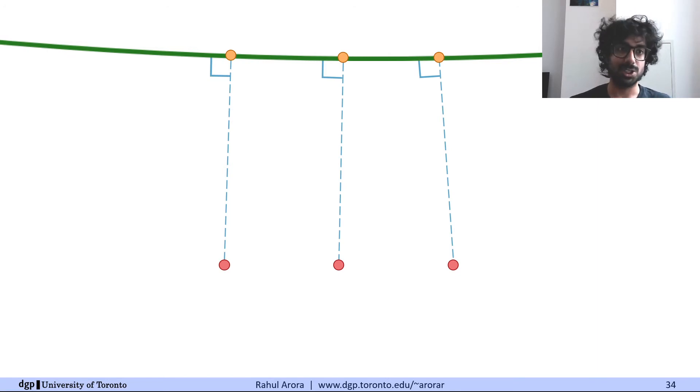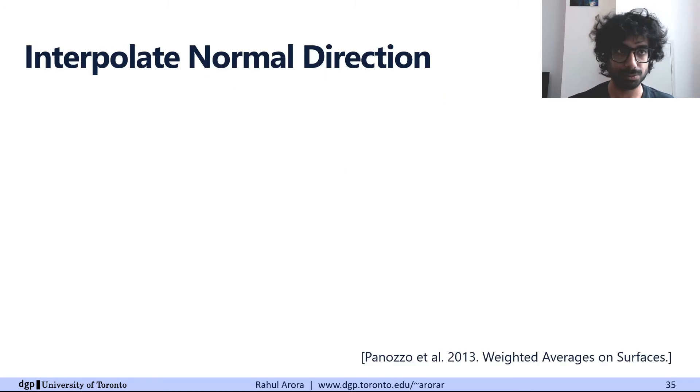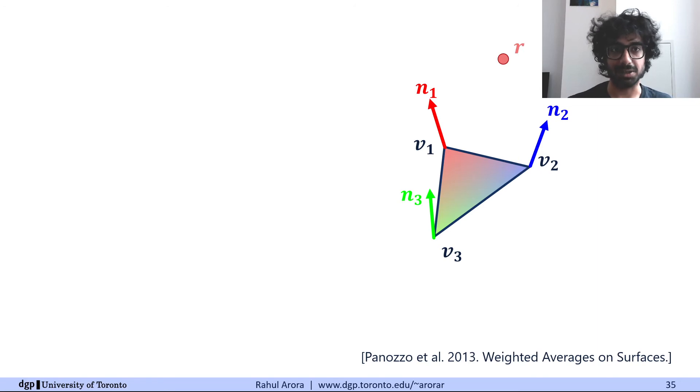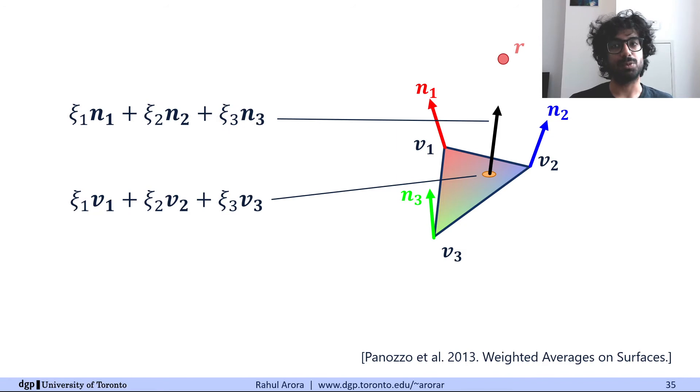So how can we approximate this projection when we only have access to a triangle mesh? To do this, we extend Panozzo and colleagues' Fong projection from 2013. So what they do is, instead of thinking of a triangle as flat with a constant normal, they compute an interpolated normal field across triangles and use it to compute an orthogonal projection. So for a given point R and a triangle, we want to solve for the barycentric coordinates, psi 1, psi 2, psi 3, such that the interpolated normal at this point is aligned with the line joining the point to R.